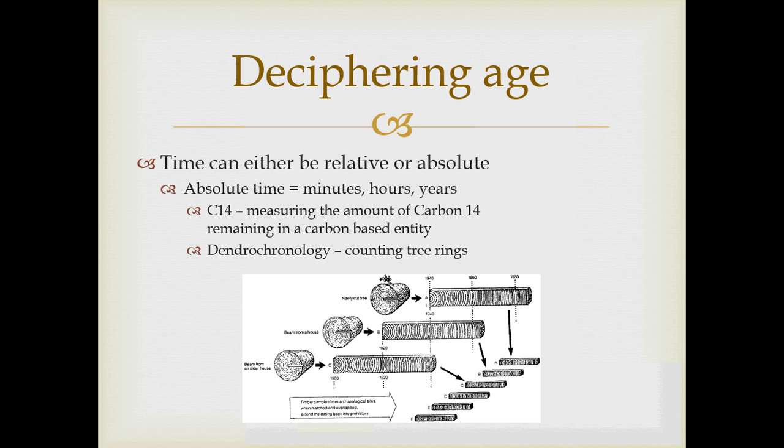When we are digging archaeologically, we need to be able to tell how old something is. Time is counted in relative or absolute aspects. Absolute time is the time we live in now — minutes, hours, and years. There are two major ways to deal with absolute time in archaeology: the C14 method, which measures the amount of carbon-14 remaining in any carbon-based organic entity, and dendrochronology, which is counting tree rings from wooden remains left on site. Huge databases of tree rings allow us to identify the age of something by counting backwards and matching up the thickness of rings with other objects.